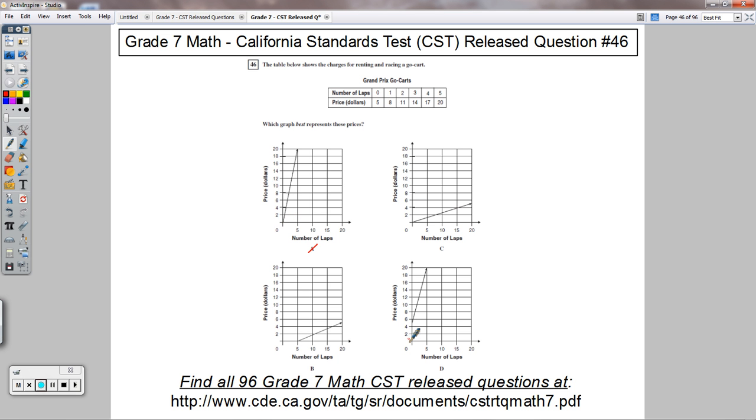I'm looking for one that starts at 0, 5, and so this one starts at 0, 0, not that one. Choice B down here starts at 5, 0, not 0, 5, so not that one.